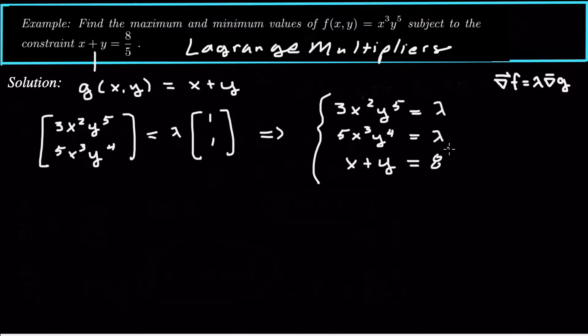To solve the system, I always look for a weakness. And this weakness here is that both of these expressions on the left are equal to lambda. So what I can do is just equate those two sides on the left. So that will tell me that 3x squared y to the 5th is equal to 5x cubed y to the 4th.